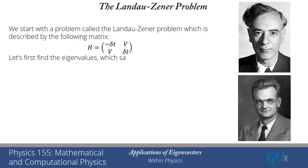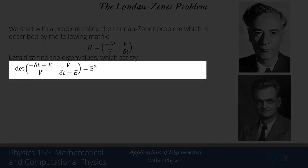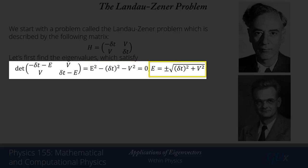The first thing we want to do is find the eigenvalues — these would be the instantaneous eigenvalues of the Hamiltonian. They satisfy the determinant of H minus E times the identity matrix equal to zero. That's actually pretty easy to expand: you find it equals E squared minus (delta·t)² minus v² = 0, so you immediately get E equal to plus or minus the square root of delta·t squared plus v squared.